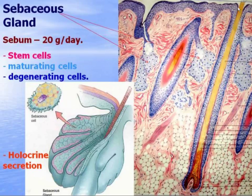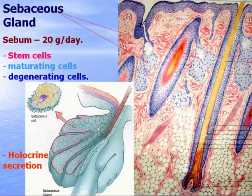The type of secretion is holocrine — meaning the cell accumulates sebum, then dies, is destroyed, and the cell itself is included into the secretion.